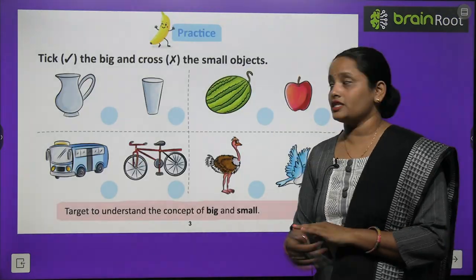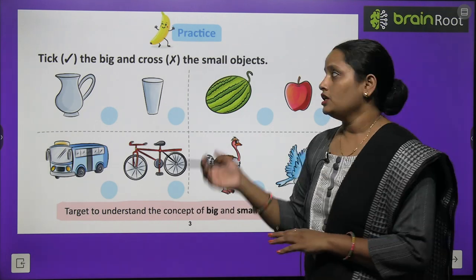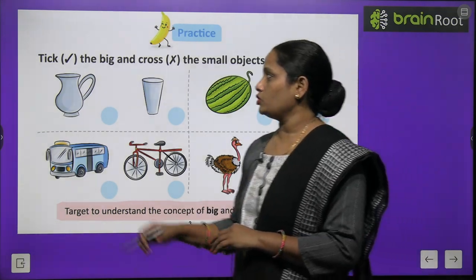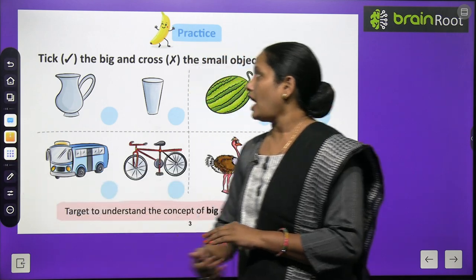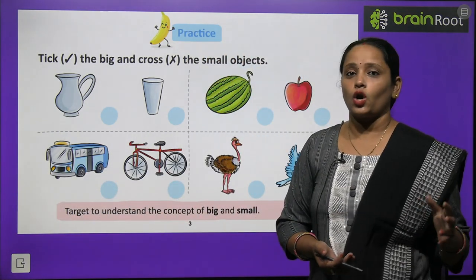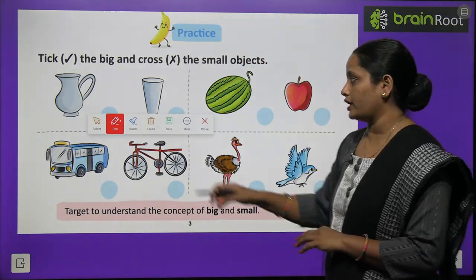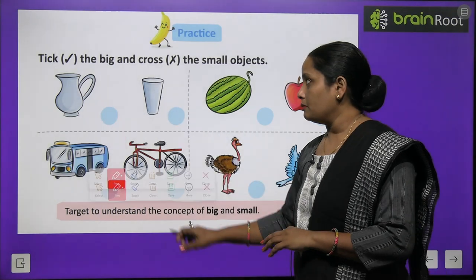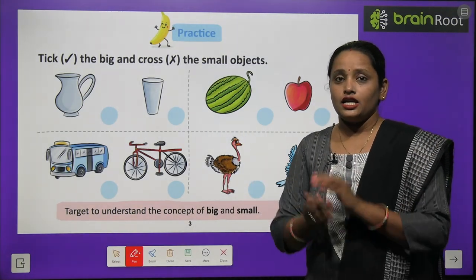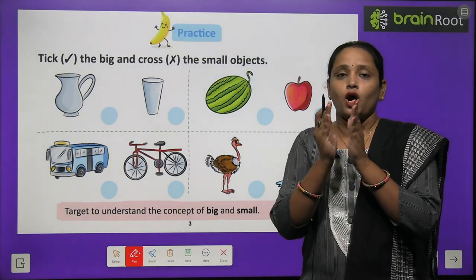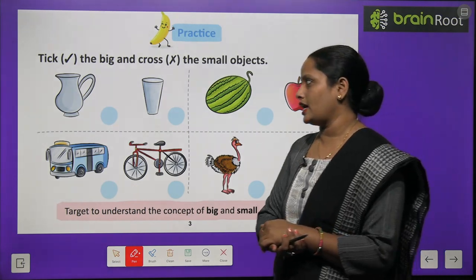Now let's practice what we have learned. You have to tick the big and cross the small object. Aapko kya karna hai? Bade object ko tick karna hai, small ko cross karna hai.